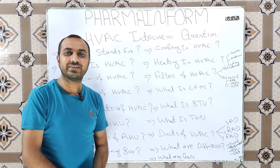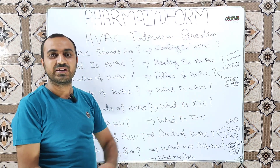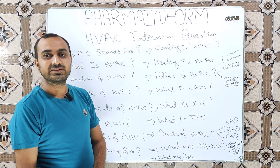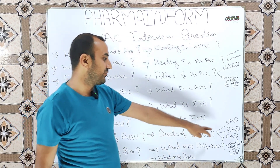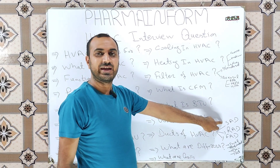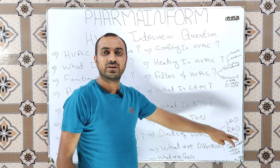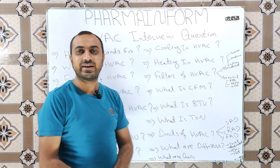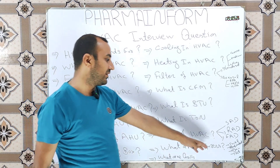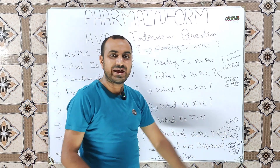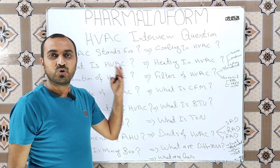The next question is: tell us about the ducts of HVAC. There are three types of ducts in HVAC. The first is SAD — supply air duct. The second is RAD — return air duct. And the third is FAD — fresh air duct. You may have seen these abbreviations written on the ducts of HVAC systems.